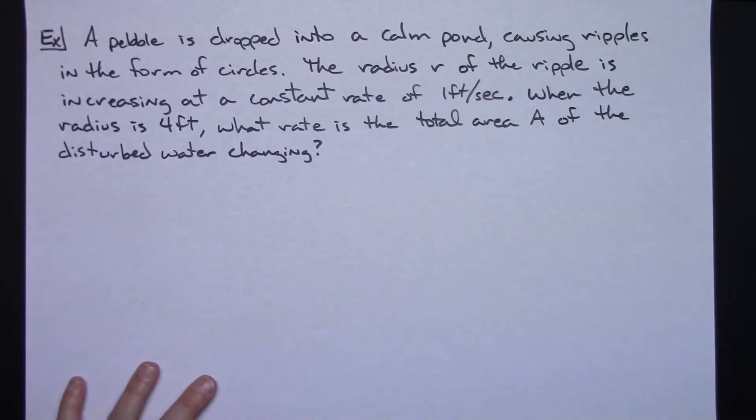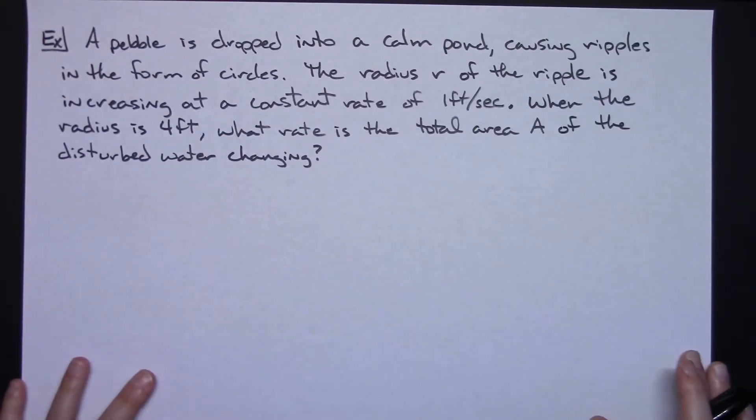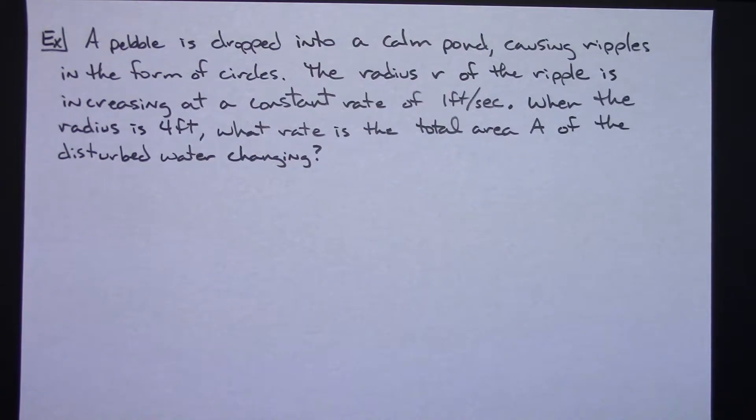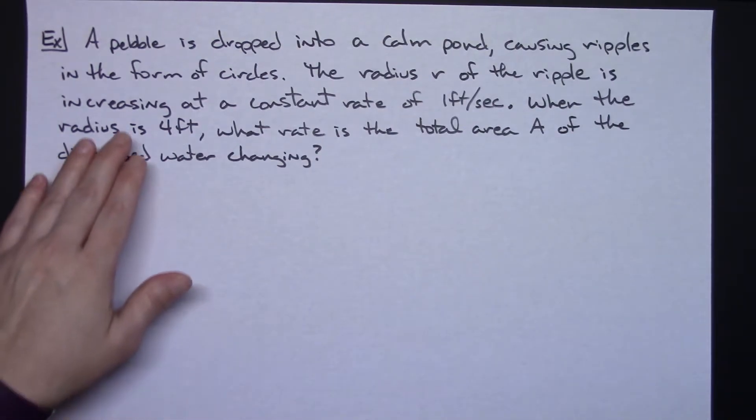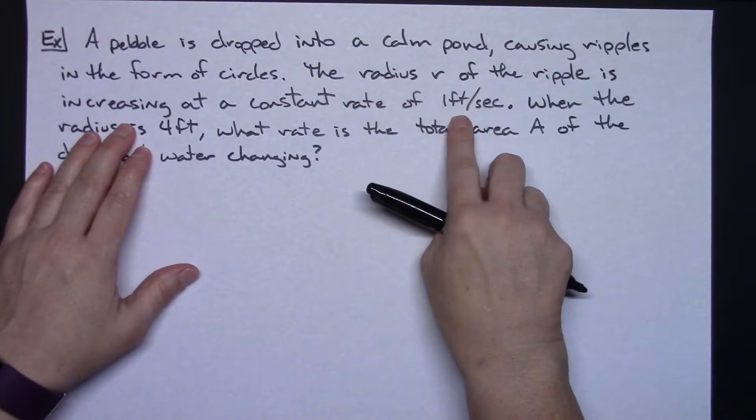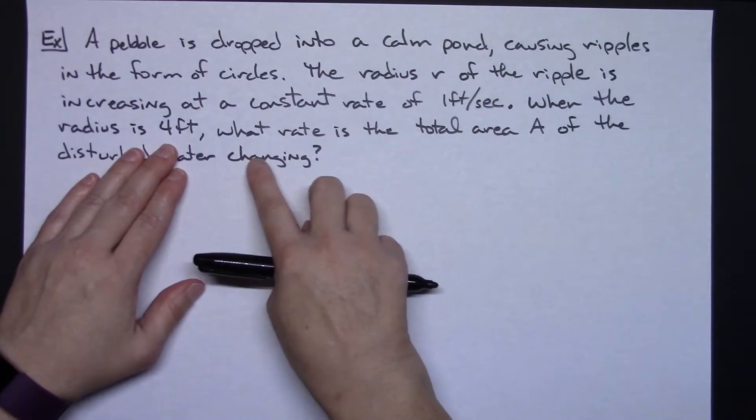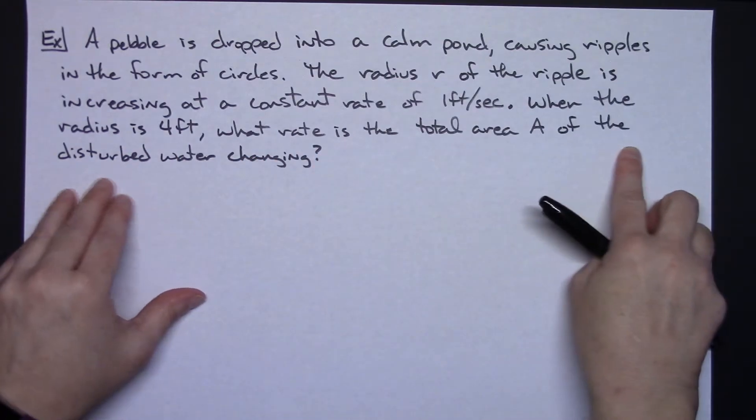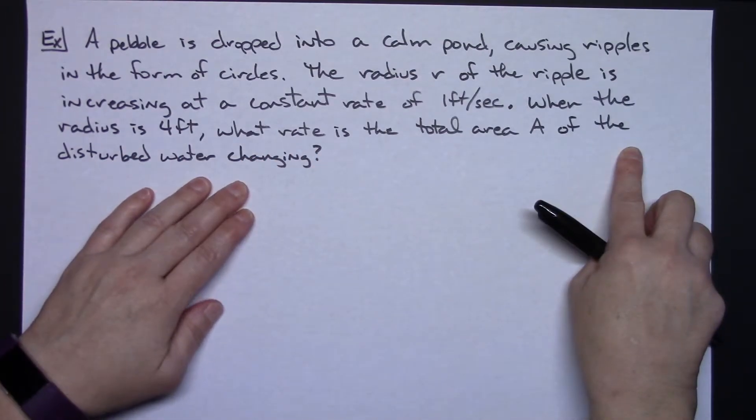Let's take a look at what we've got here. In this first example here I've got a pebble is dropped into a calm pond causing ripples in the form of circles. The radius r of the ripple is increasing at a constant rate of one foot per second. When the radius is four feet what rate is the total area of the disturbed water changing?